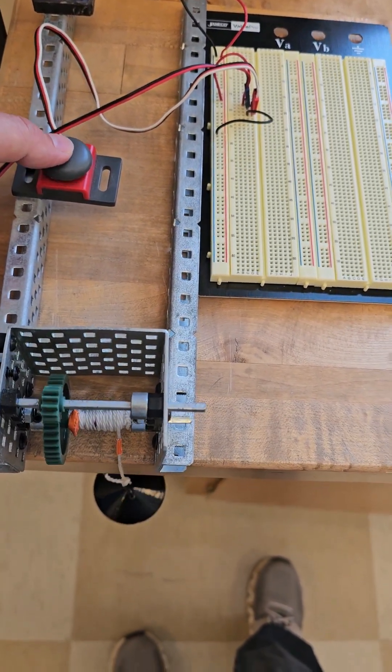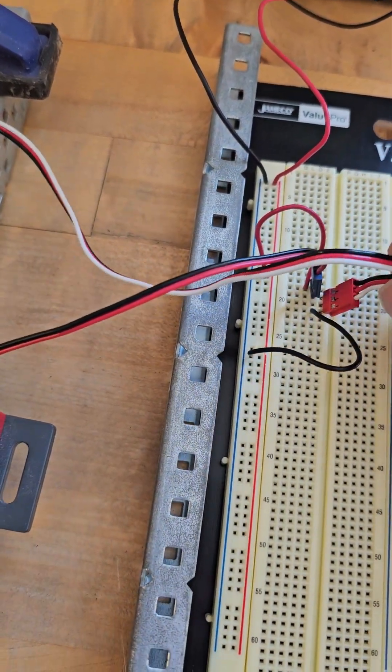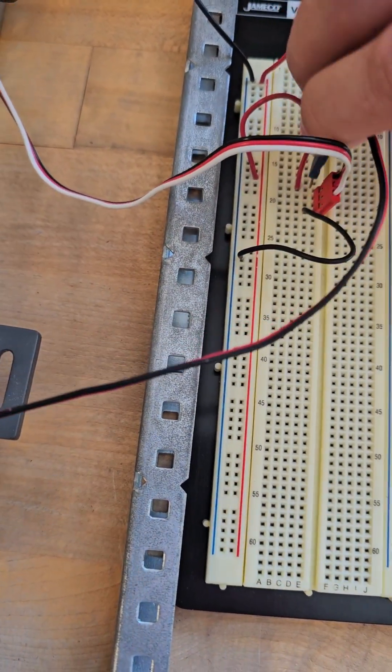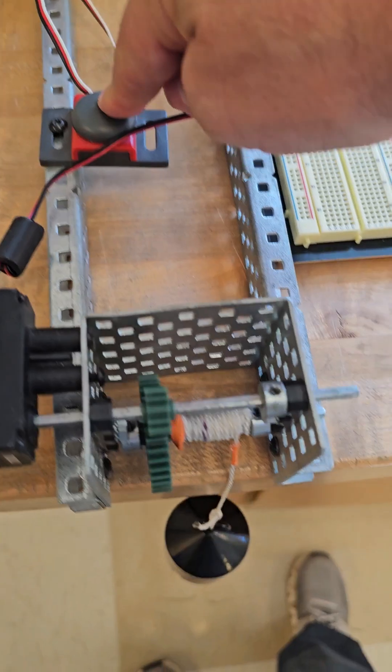When we do that, we should have a simple little series circuit, and you can see it is running the winch up. If it's running in the wrong direction, you can simply unplug the motor and flip directions. This will cause the electrons to flow through the motor in the opposite direction, and you'll see now it is going down.